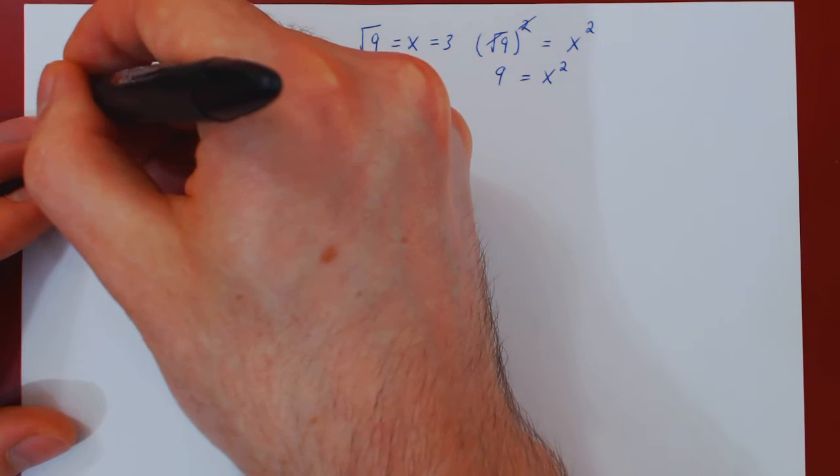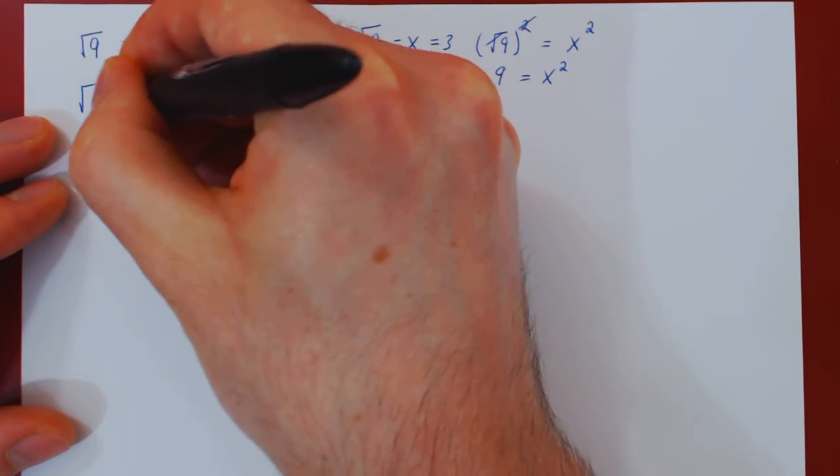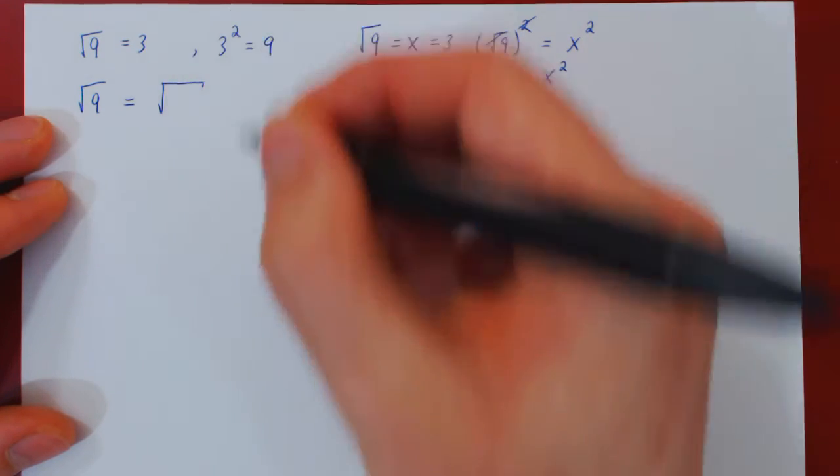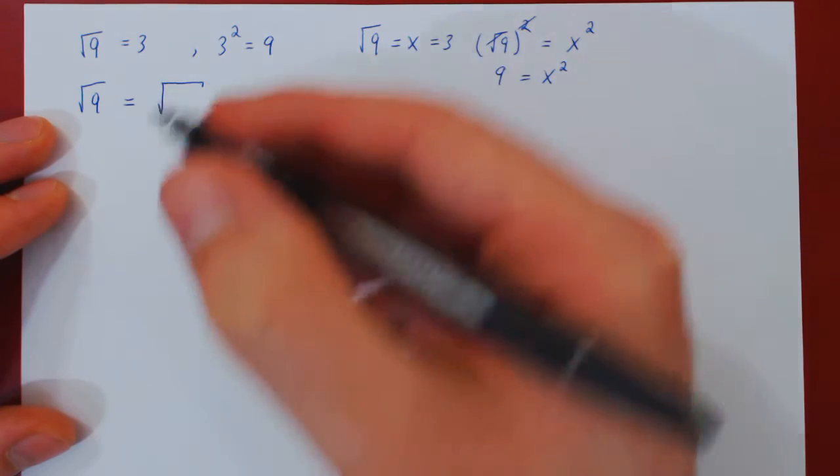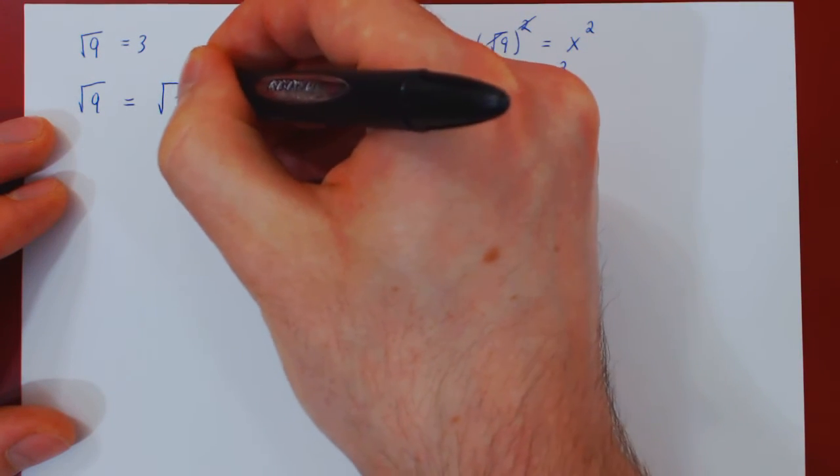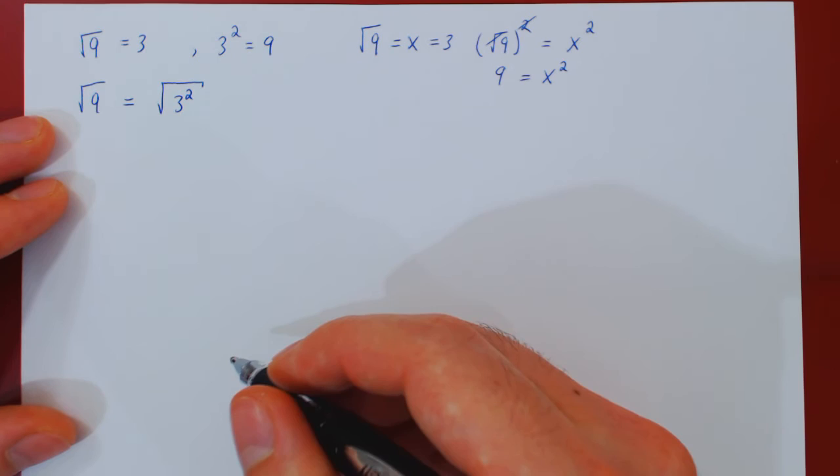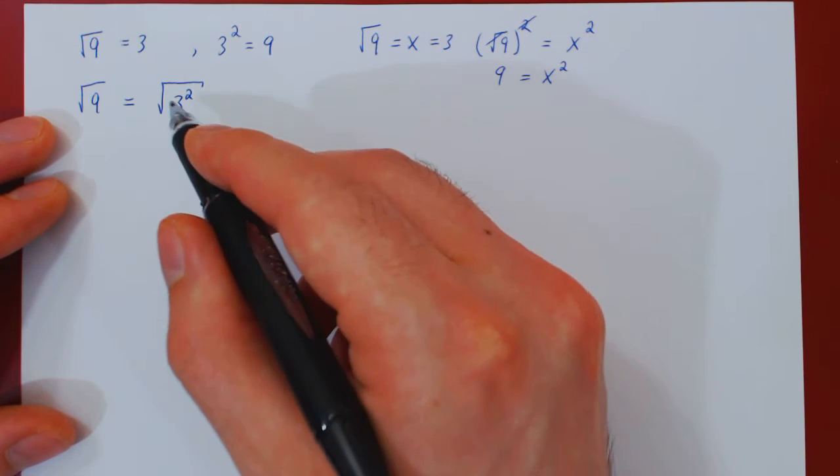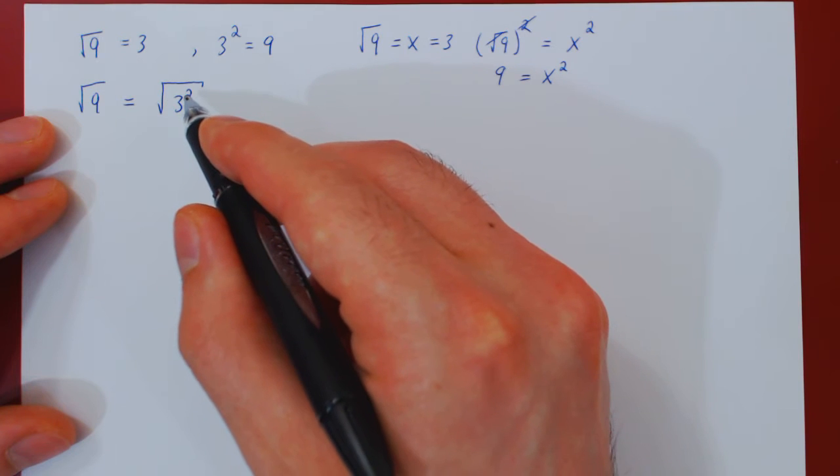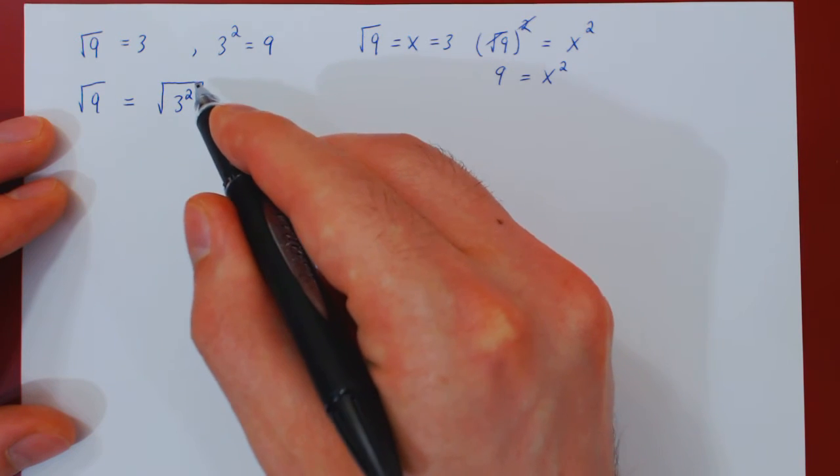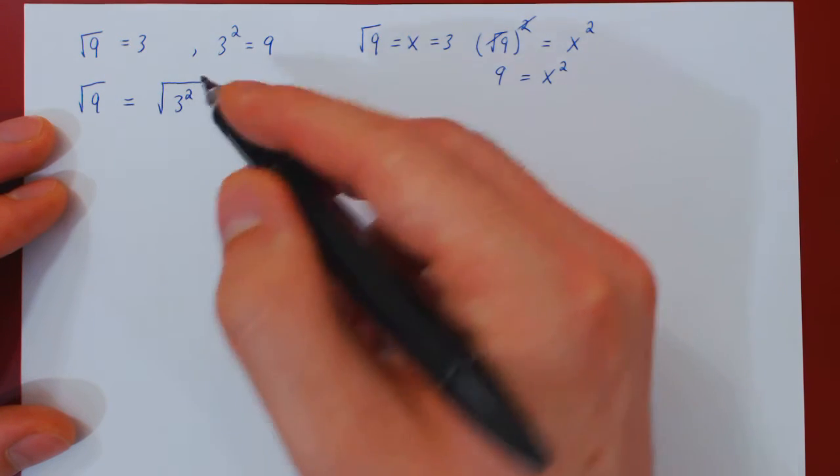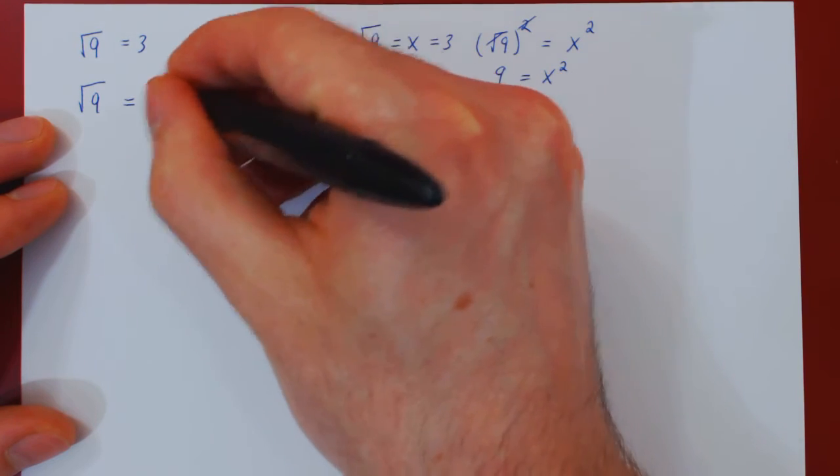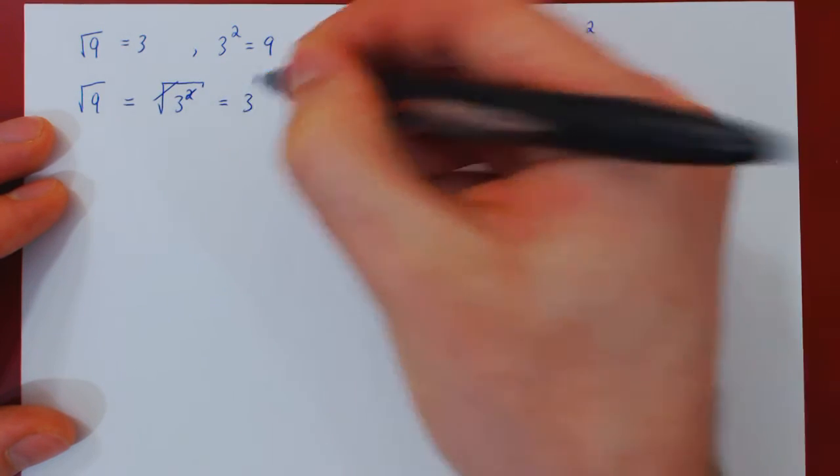You can also view it this way: the root of 9 equals the root of, and now rewrite 9 as 3 squared. And again, by definition, the square root is the inverse of the square function. So if you take 3, then square it, then apply the inverse transformation, the square root, it cancels and you are left with 3.